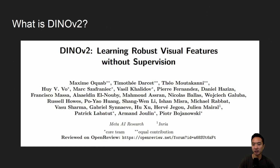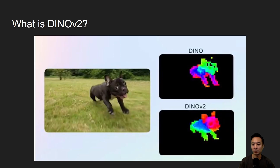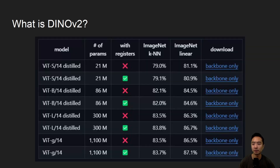So what is DINOv2? There's a paper that Meta AI came out with called 'Learning Robust Visual Features Without Supervision.' One of the key parts of DINOv2 is the robustness — invariance to rotation, scale, and all of that. DINOv2 comes in a lot of different model sizes, from 21 million parameters up to 1 billion parameters, and you can see all the different models available for download.